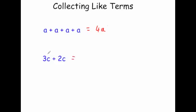Let's have a look at 3c plus 2c. If you have 3c's and you add 2c's, altogether you'd have 5c's. That makes sense because 3 times c plus 2 times c would be the same as 5 times c. So whenever you're collecting like terms you just add up how many of the letters you have.